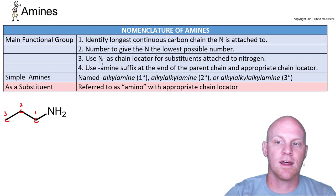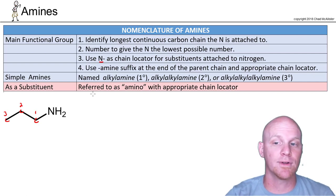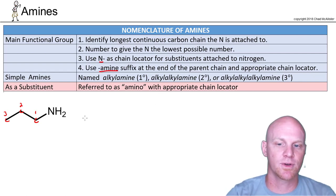So we're going to use an N as a chain locator. If there are any other carbon chains of the nitrogen, we have to give their location as being the capital N, not something we've got to worry about in this case. And then finally, we'll use this amine suffix, and we'll use the appropriate chain locator to say where it is.